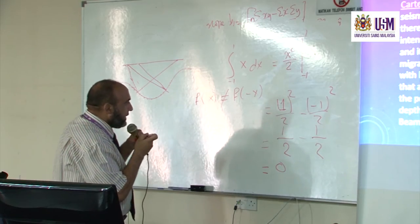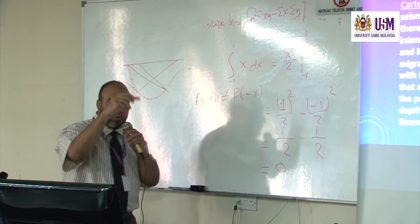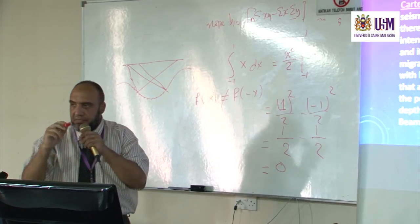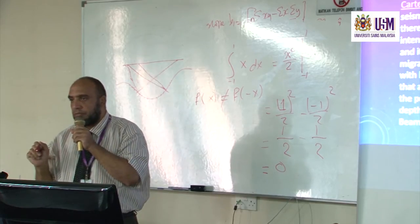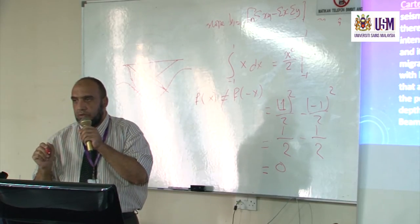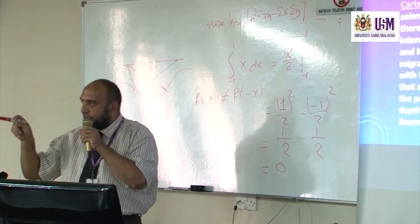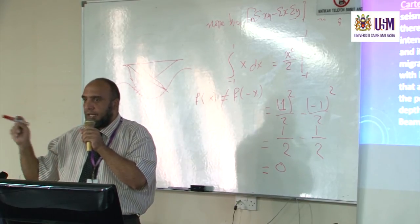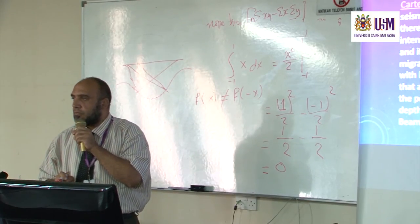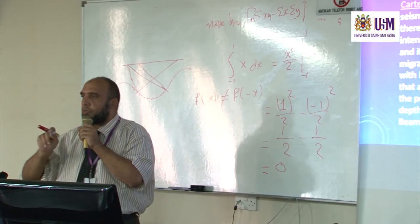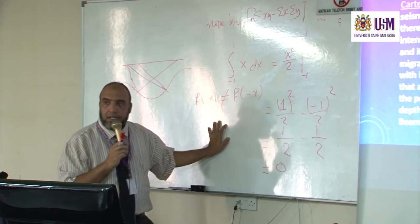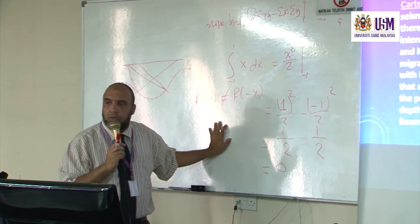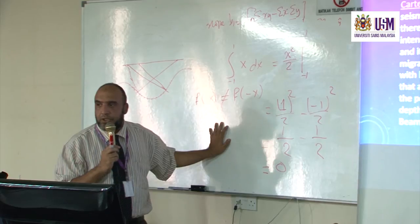But in case if you have x squared, f(x) equal x squared, x squared is an even function because f(x) equals f(-x) and both equal x squared. So in this case, if f is even, we have a value for the integration.